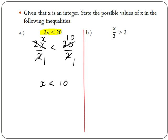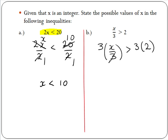Now let's look at part b. In part b we have x divided by 3 is greater than 2. We need to multiply both sides by 3 to get x by itself. So we have 3 times (x divided by 3) and 3 times 2. Since 3 into 3 goes once, we are left with x is greater than 6. This means we can replace x in our original inequality with any integer greater than 6 and the inequality will still be true.